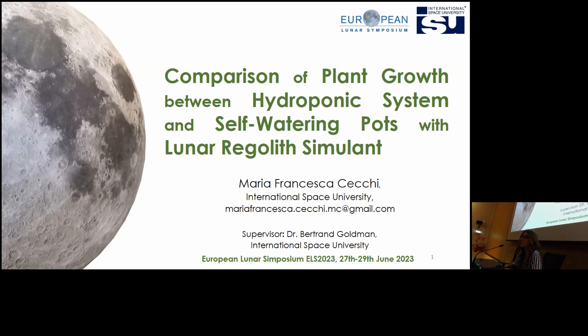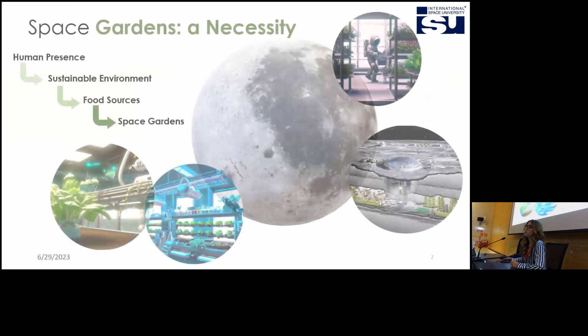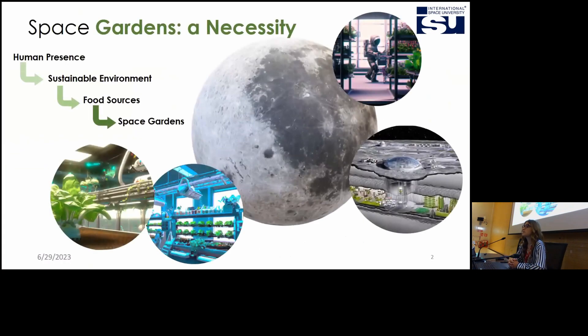It's a project of three months where I had the possibility to compare the plant growth between the hydroponic system and self-watering pots with lunar regolith. This project comes from the necessity of a sustainable environment for future human settlement on the moon. We need food resources and this means we need space gardens.